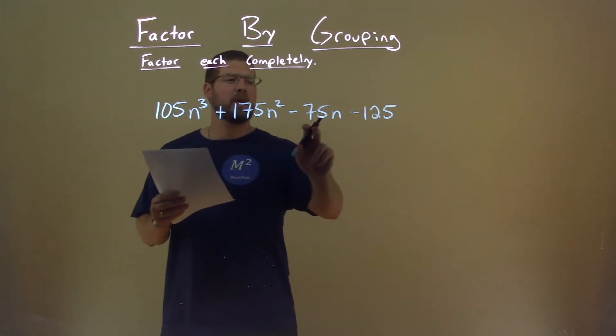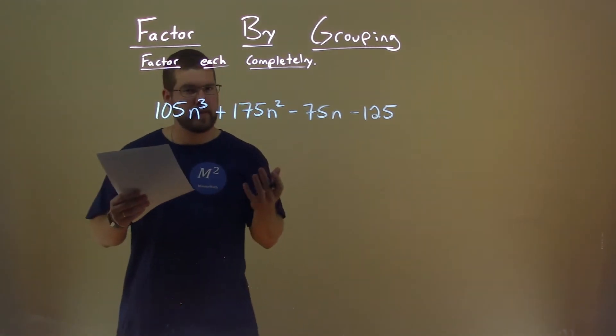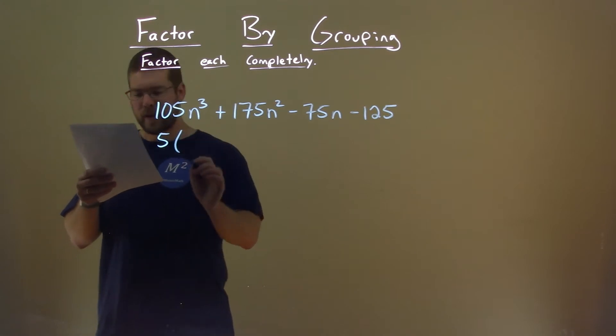Well, notice all of these numbers end in 5, meaning we can pull out a 5 from all of them. Let's make these numbers smaller. If we pull out a 5 right here, what are we left with?